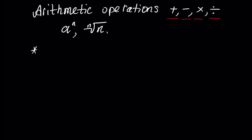In this case, assume we have two numbers, a and b, where a and b are elements of the real line, or in other words, a and b are real numbers.